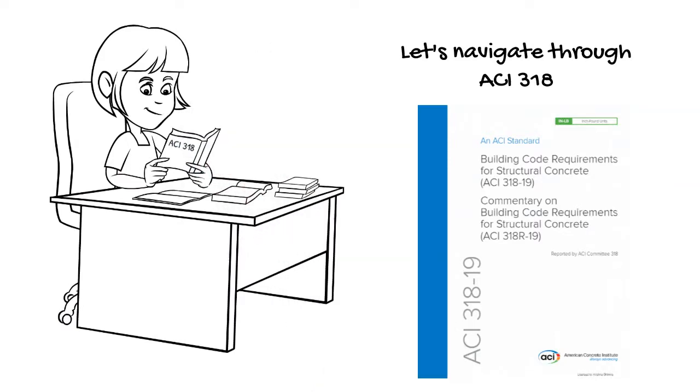The organization of the code was revamped in ACI 318-14 and ACI 318-19 code has the same format as that of the 2014 version. So this overview works for both versions. Have your copy of the code ready to flip as you watch this video.